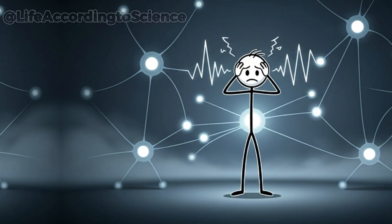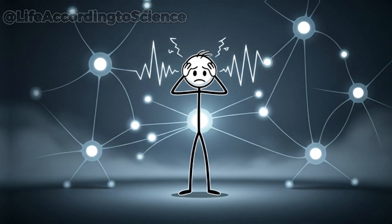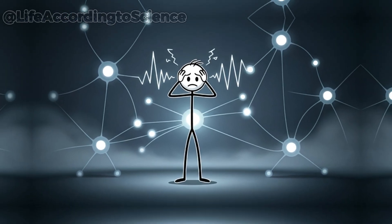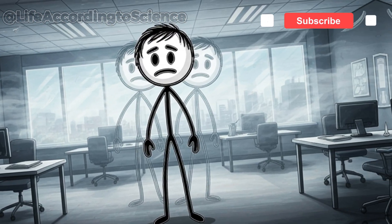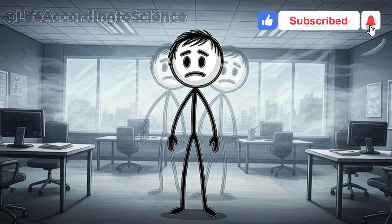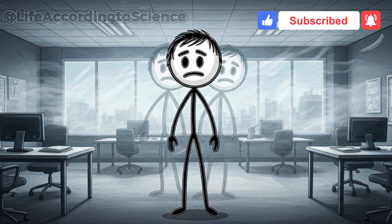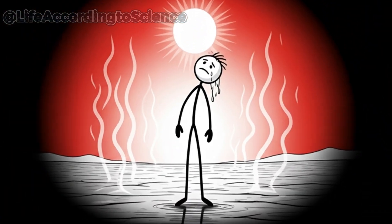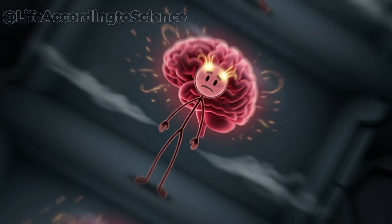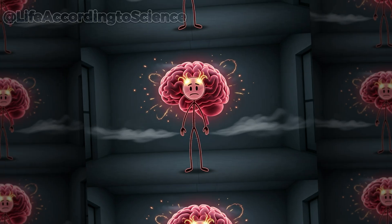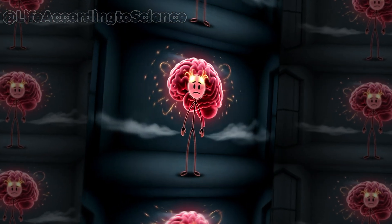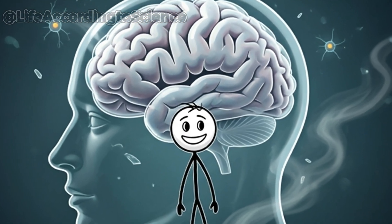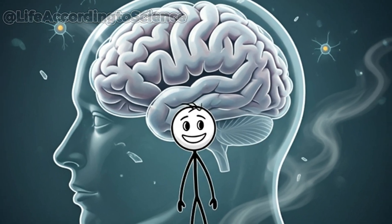The third day is when your brain truly begins to suffer. Neurons depend on water to transmit electrical signals, and with less of it, messages between cells slow dramatically. Concentration becomes almost impossible, and confusion sets in. You might even start hallucinating slightly, as dehydration mimics the effects of sleep deprivation. Your body temperature rises. Without enough water, sweating nearly stops, making internal heat harder to manage. This triggers inflammation and damages brain cells.